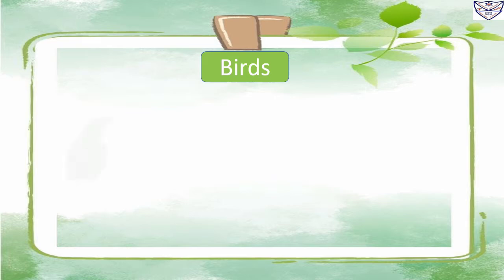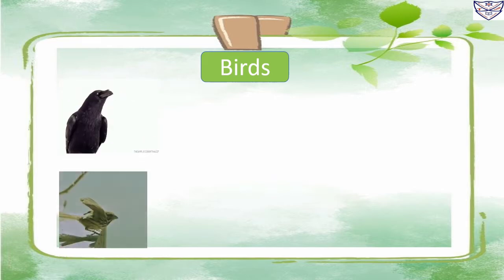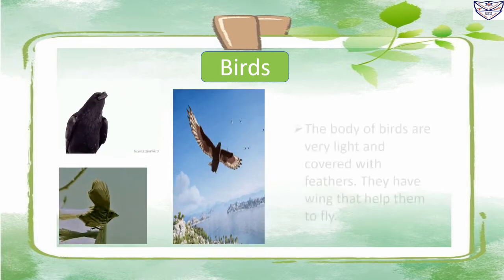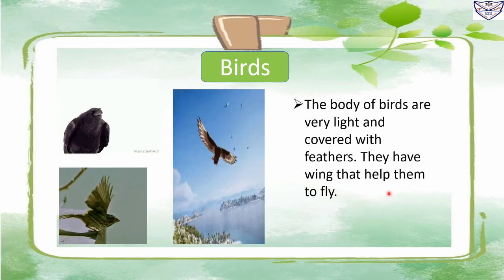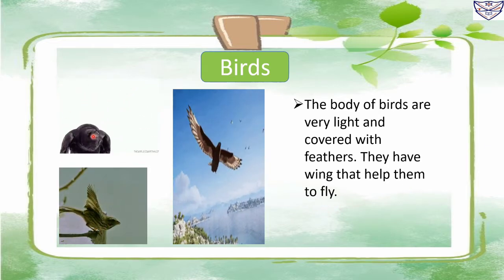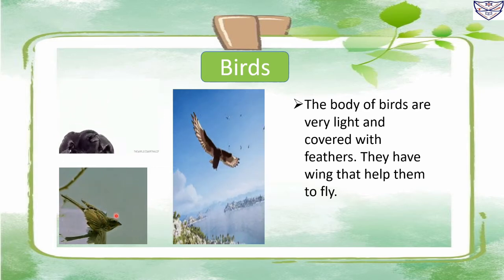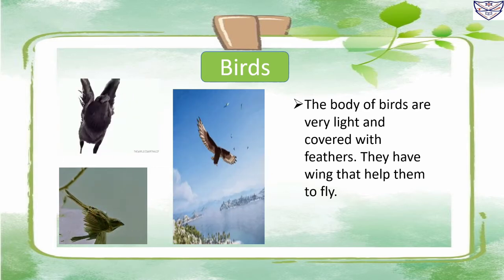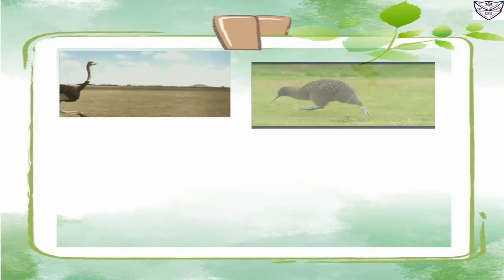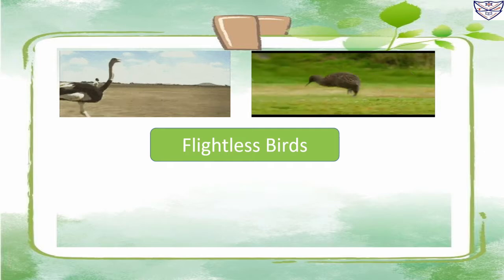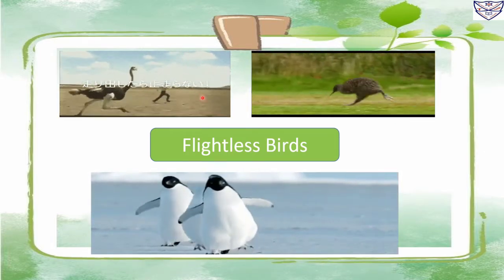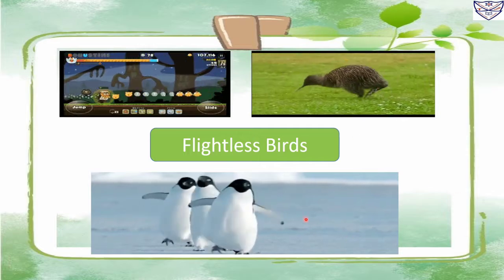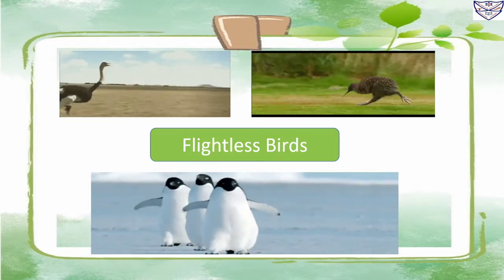Birds: the body of birds is very light and covered with feathers. They have wings which help them to fly. For example, crow, sparrow, and eagle. Some birds that cannot fly due to their heavy body, such as ostrich, kiwi, and penguin, are called flightless birds.